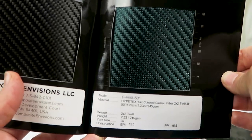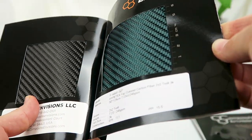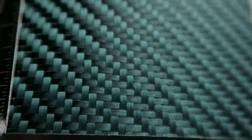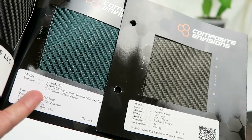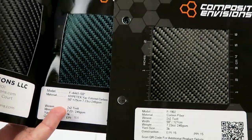The last color in this sample pack is called Yaz and it's green, but it's more of a blue-green, definitely not the lime green that's more typical for the dyed composite fabrics. Here is that one compared to plain carbon fiber.